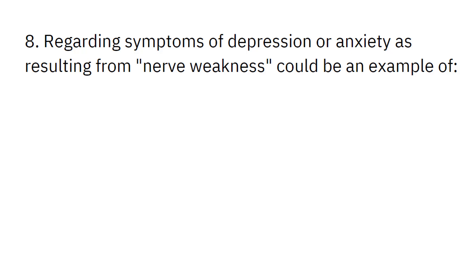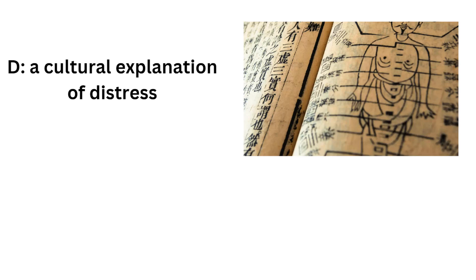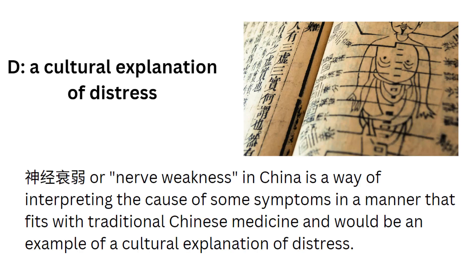Regarding symptoms of depression or anxiety as resulting from nerve weakness could be an example of: evolution, comorbidity, labeling, cultural explanation of distress, stigmatization. And this would be D, a cultural explanation of distress. Shenjing shuairuo, or nerve weakness in China, is a way of interpreting the cause of some symptom conditions in a manner that fits with traditional Chinese medicine, and would be an example of a cultural explanation of distress.